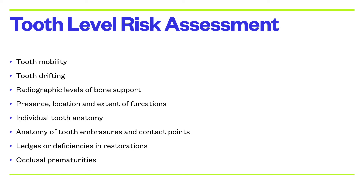Look for the radiographic levels of bone support, as this is one primary evidence that will help you place a patient at a particular risk level. Assess the presence, location, and extent of furcation involvement — if it is grade 1 to grade 4, it helps determine the level of risk. If furcation involvement is in molars, they are likely to get affected soon and tooth loss could be inevitable.